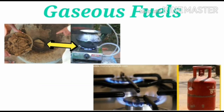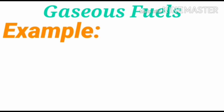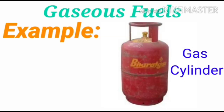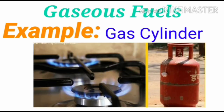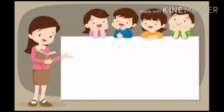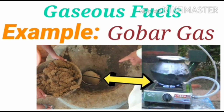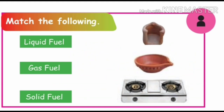The third one is gaseous fuels. The fuels which are in gaseous state are called gaseous fuels. For example, gas cylinder — inside the cylinder LPG gas is there, that is liquefied petroleum gas. This fuel also burns and we use this in the kitchen for cooking. One more example: gobar gas, which is also used for cooking.